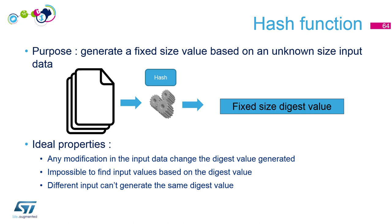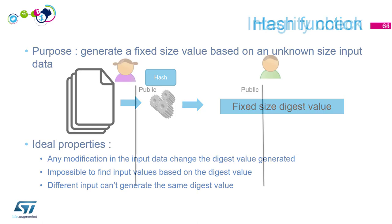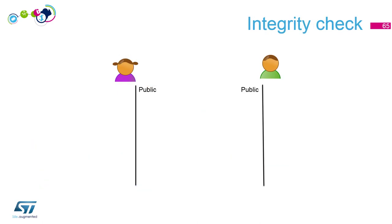I say 'ideal' because in reality all algorithms could have some weaknesses, which is why some algorithms are considered broken and some others not — or not yet, unfortunately. Let's come back to Bob and Alice.